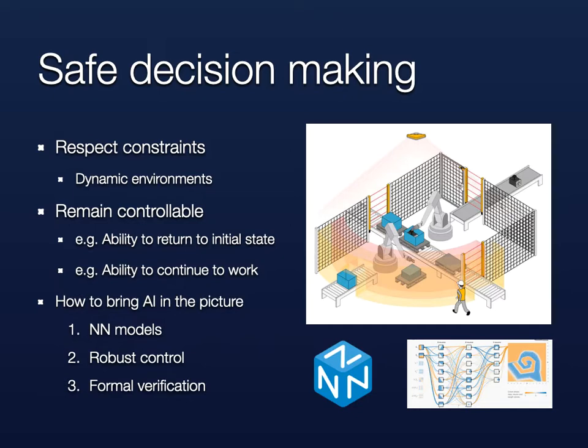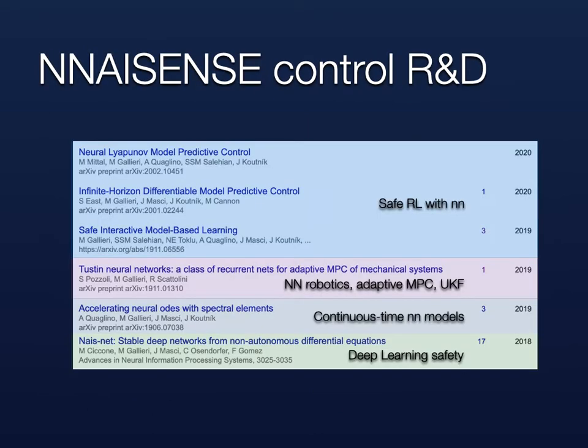Our strategy is to study neural network models and model-based decision-making with the help of elements of robust control and formal verification. I will introduce four of our latest research papers covering the questions: how can dynamics and control help deep learning, and how can neural networks help for dynamics and control?